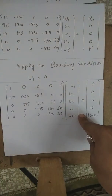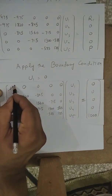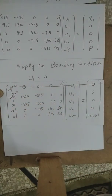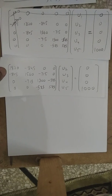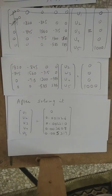Since the first column is multiplied by U1 = 0, the entire first column and first row become zero and can be eliminated. After removing them, we are left with a 4×4 matrix. Solving this system using Excel or MATLAB gives the displacements at the remaining nodes, which are the same values obtained from the direct method, confirming all three methods yield consistent results.